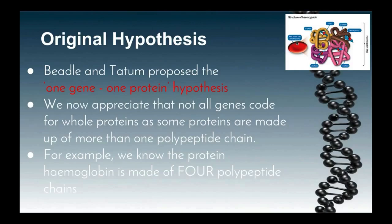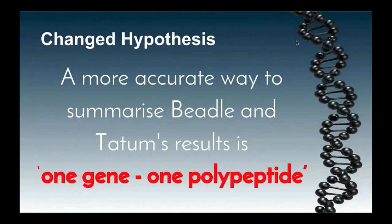Over time, however, it was discovered that some proteins can be made up of more than one polypeptide chain. For example, we now know that haemoglobin is made up of four polypeptide chains. In the late 1950s, protein fingerprinting was able to look closer at protein structures and found that genetic variations in proteins could be limited to differences in just one polypeptide chain, leading to the change in the hypothesis from one gene, one protein to the one gene, one polypeptide hypothesis.